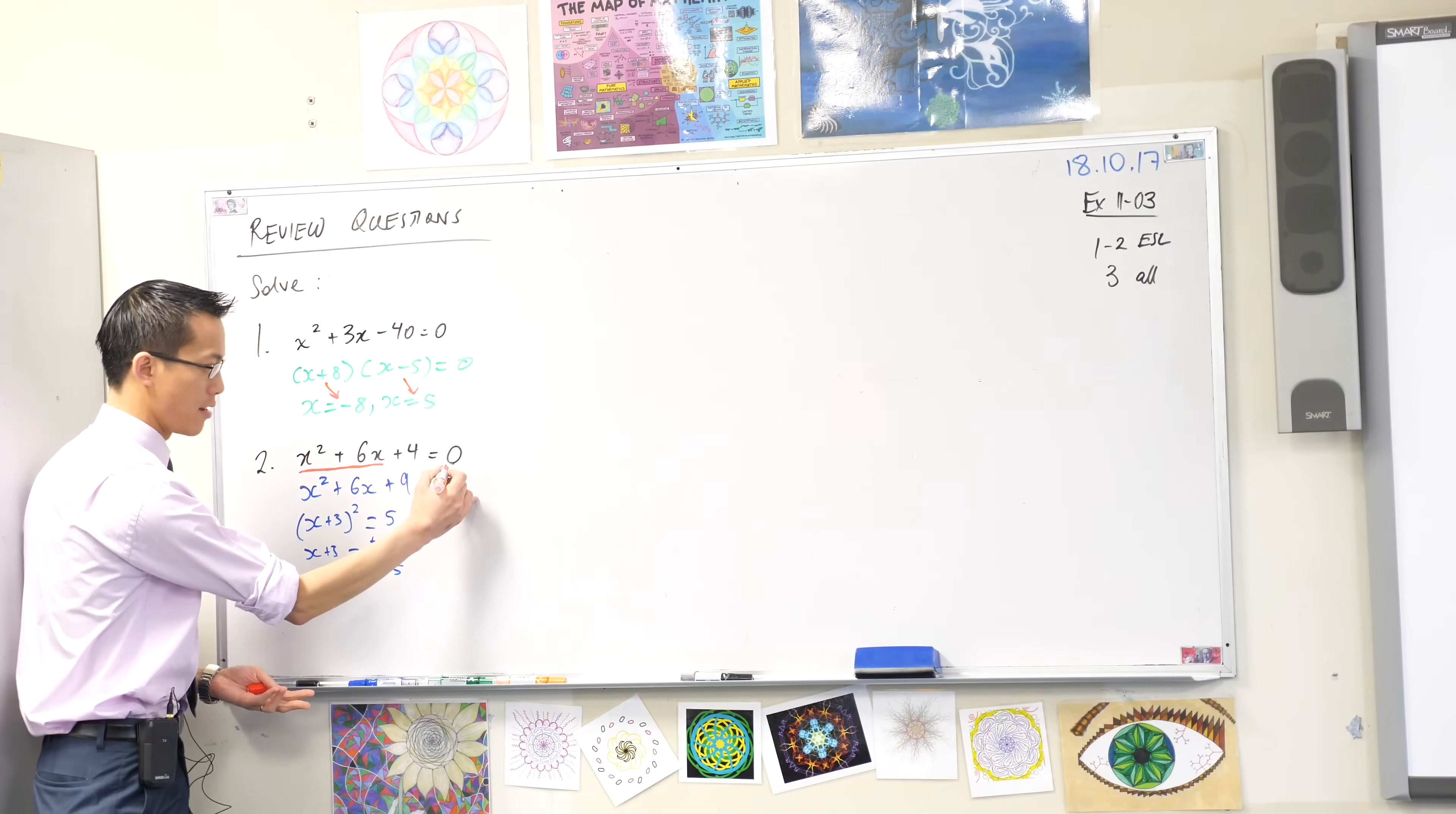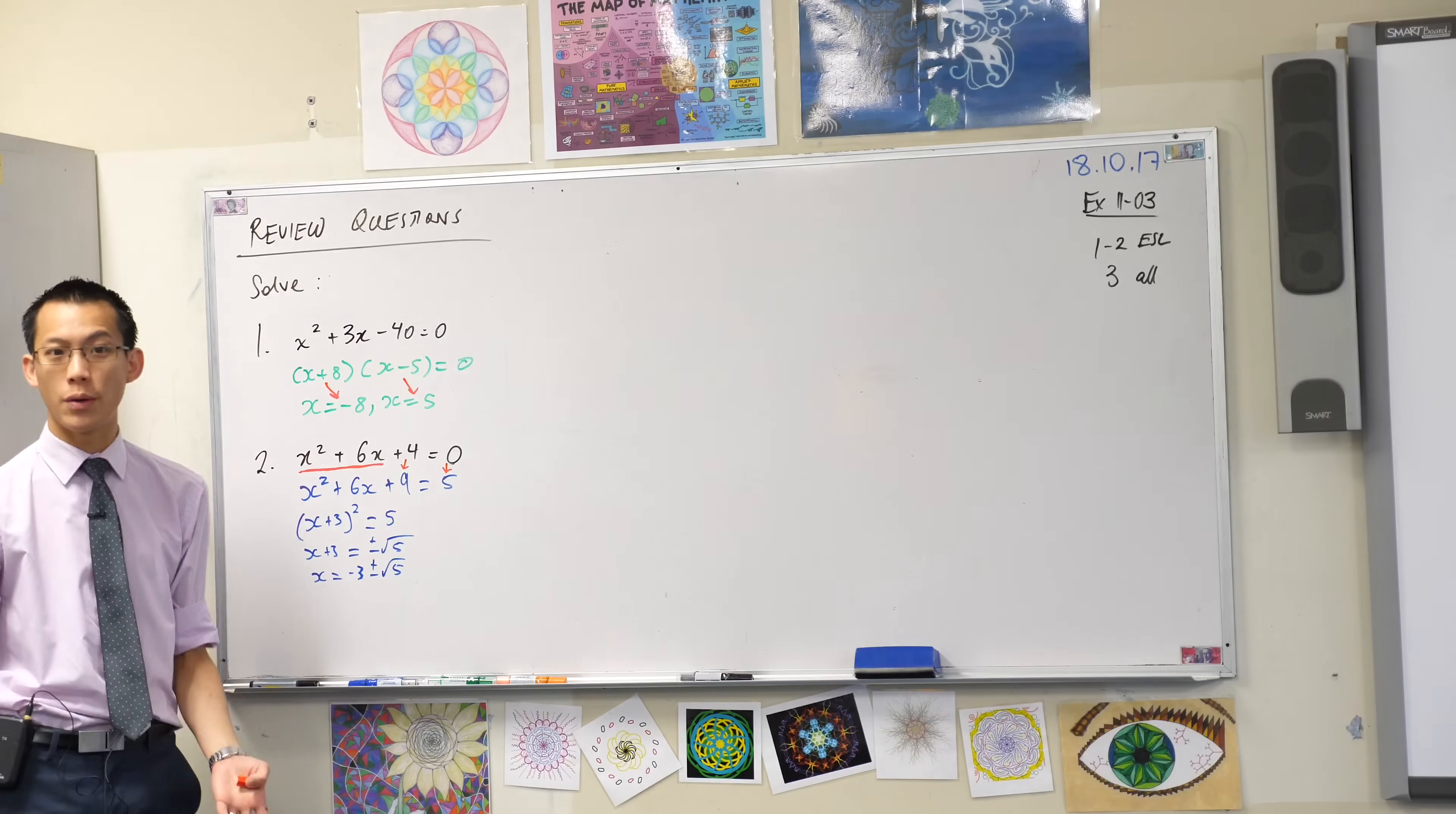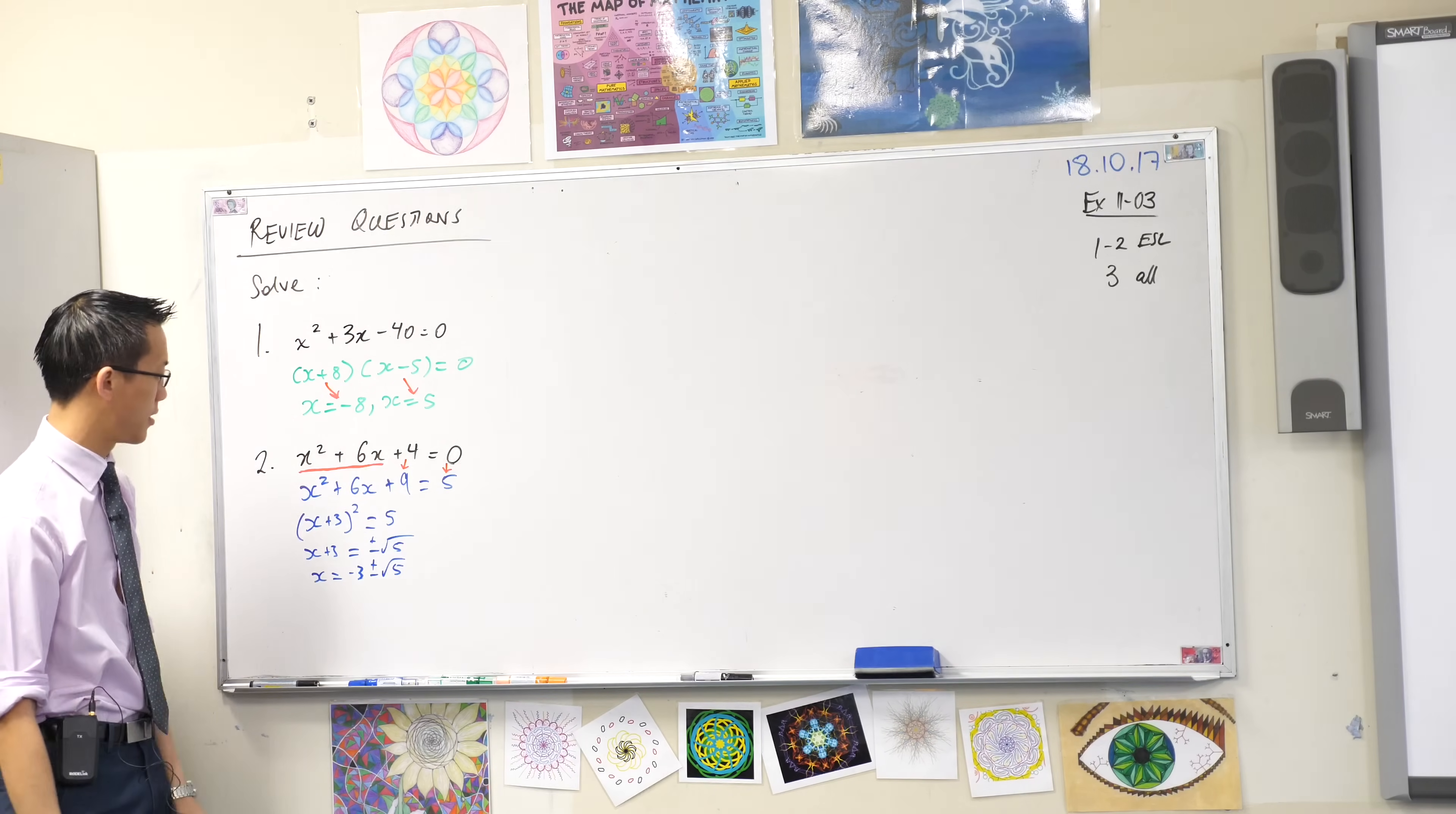So what Areeb has done is added what to both sides? Have a look. He's added 5 to both sides, right? That turns his 4 into a 9 which is exactly what we need. If you had an intervening line before that, that's okay. You should have still ended up with the 5 on the right-hand side.